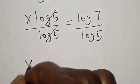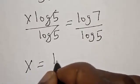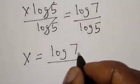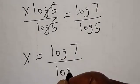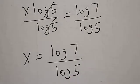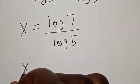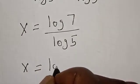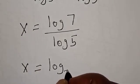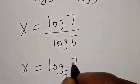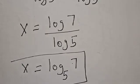We have x is equal to log 7 over log 5. Now, our final answer may be written as x is equal to log base 5 of 7. That is our final answer.